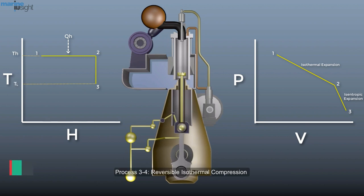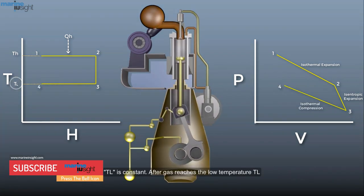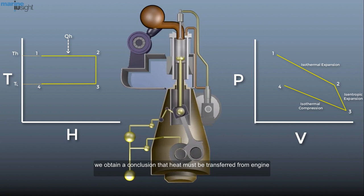Process 3-4: Reversible isothermal compression. Tl is constant. After gas reaches the low temperature Tl, the gas inside the engine cylinder is compressed with the help of external force. Since the temperature remains constant at Tl, no change of internal energy of gas occurs. According to the first law of thermodynamics, we obtain a conclusion that the heat must be transferred from engine to low temperature reservoir.